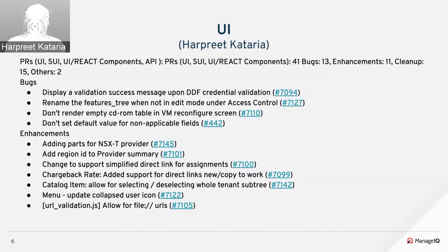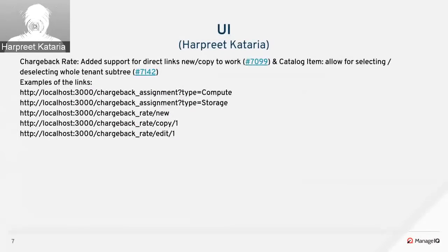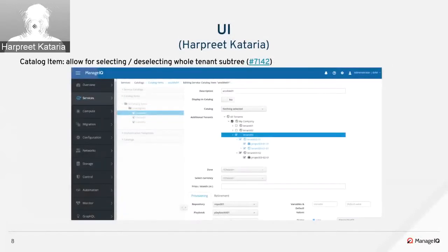Thanks Oleg. Hello everyone. A total of 41 UI PRs were merged this sprint — 13 bug fixes and 11 enhancements, along with a bunch of cleanup PRs. Changes were made to direct links in the chargeback area, simplifying links added in previous sprints to use standard Rails routes for add, edit, and delete features.